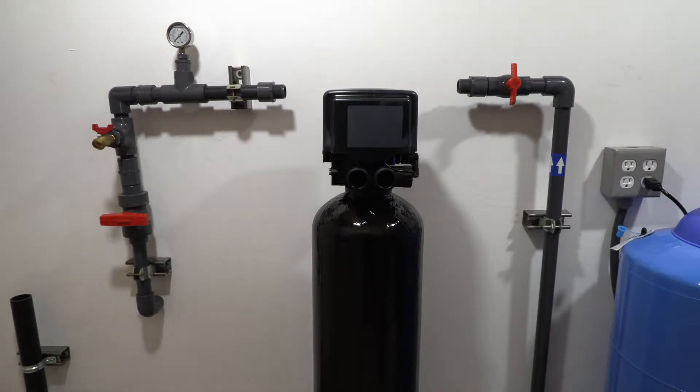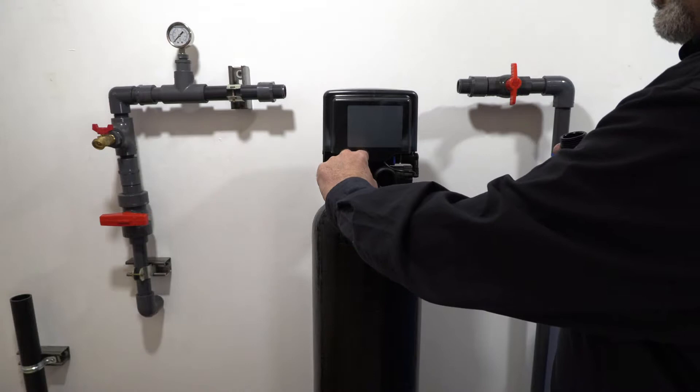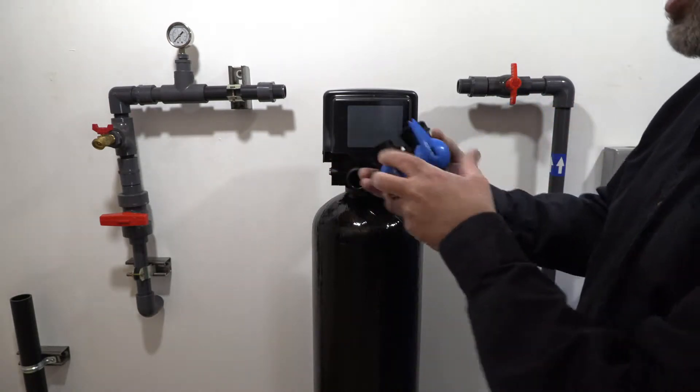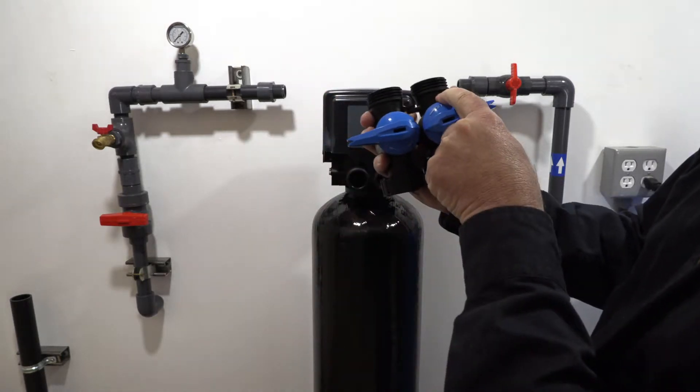Okay, now we're going to go ahead and install our bypass valve. There again, notice the end there's inlet and outlet arrow here on the valve. There's also an inlet and an outlet arrow here on the bypass valve.